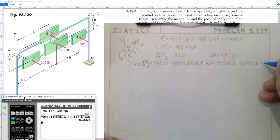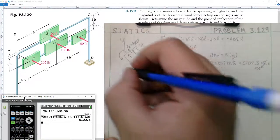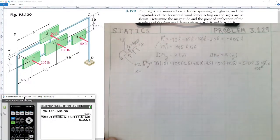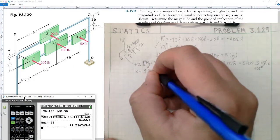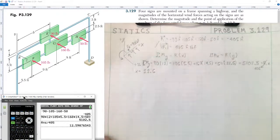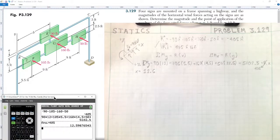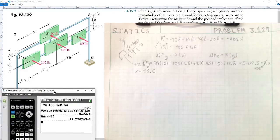So this gives us sum of moments about the Y-axis equal to 5102.5, and that's equal to the magnitude of the resultant times its X coordinate. So R is 405. We can divide both sides by 405, and we'll get our X position as being equal to 12.6 feet. And we know the forces are all acting to the right on the positive X axis, so it's 12.6 feet to the right of pole AB, or right of the origin.